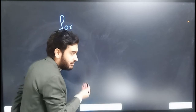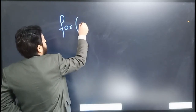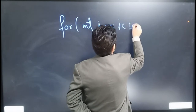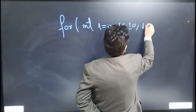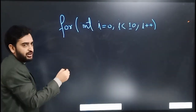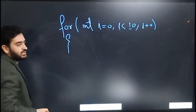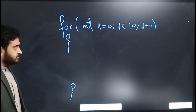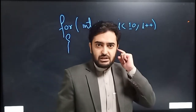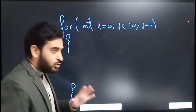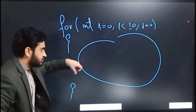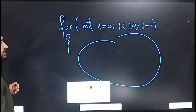We can introduce a for loop — for example, 'for (int i = 0; i < 10; i++)' — and then introduce the body of this for loop using curly braces. The concept of 'nesting' means introducing a loop inside the body of another loop.